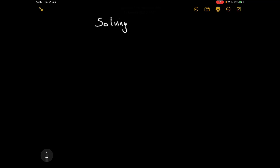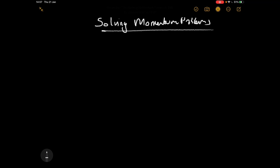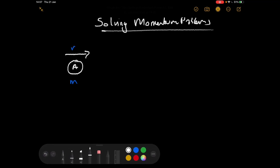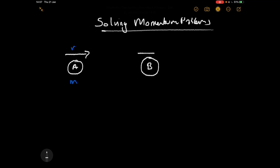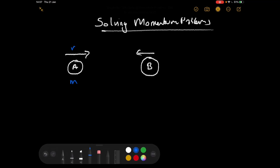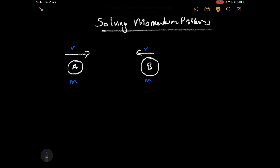This video is about solving momentum problems, dealing with how we can make the problem a little bit more complicated than before. The first thing to deal with is what do we do when we've got one object moving in one direction and another object moving in the opposite direction?